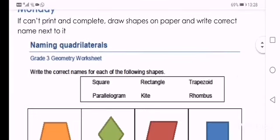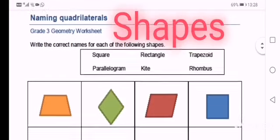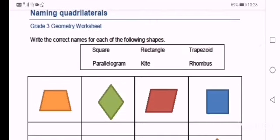It's a fancy word for shapes that has four sides. Quadri means four. So the following shapes all have four sides.